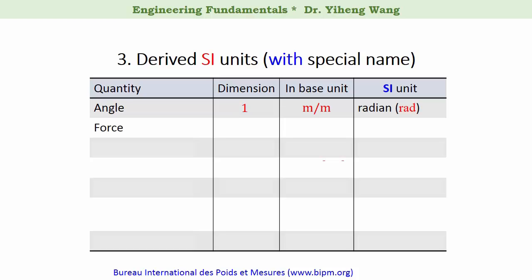Force, as defined through Newton's second law, has the dimension of mass times the dimension of the acceleration. In base units, its unit is kilogram meter per second squared, but this unit has its name of Newton.